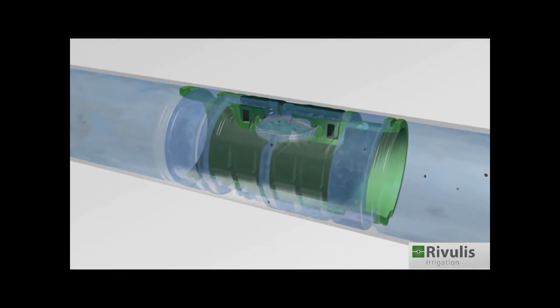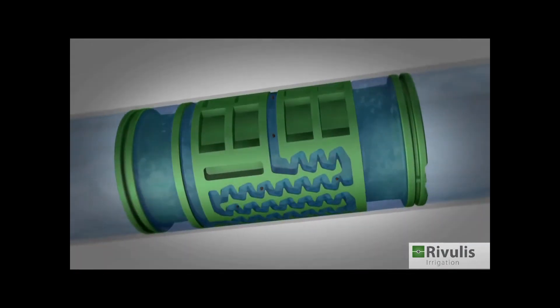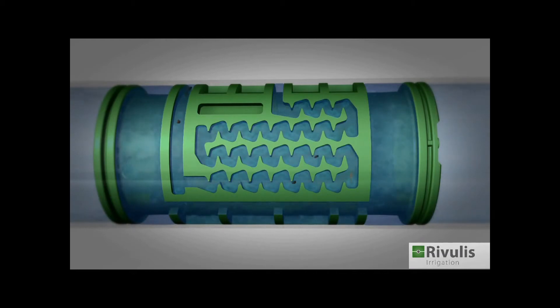Irrigation water usually contains dirt particles. The inlet filter only enables small particles to pass through. The turbulent water flowing through the labyrinth carries the dirt particles with it.